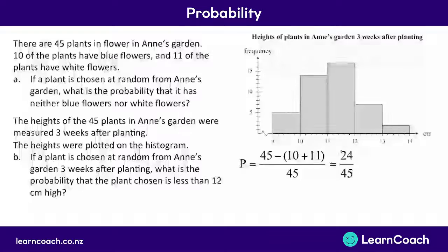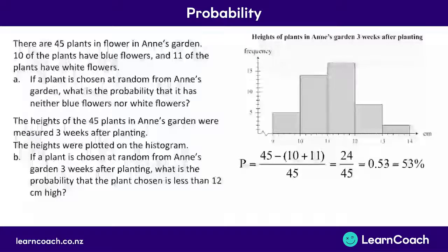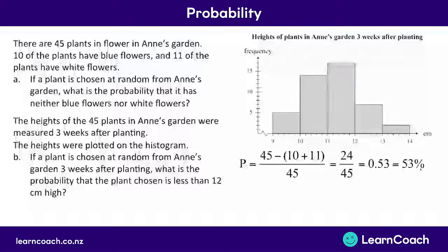Like we said before, you don't have to write it as a fraction. You can write this as a decimal by doing 24 divided by 45, which gives you 0.53. Or change that to a percentage by multiplying by 100, which gives you 53%. All of these are valid ways to write your answer, and this will still give you four marks in the exam no matter which answer you put.